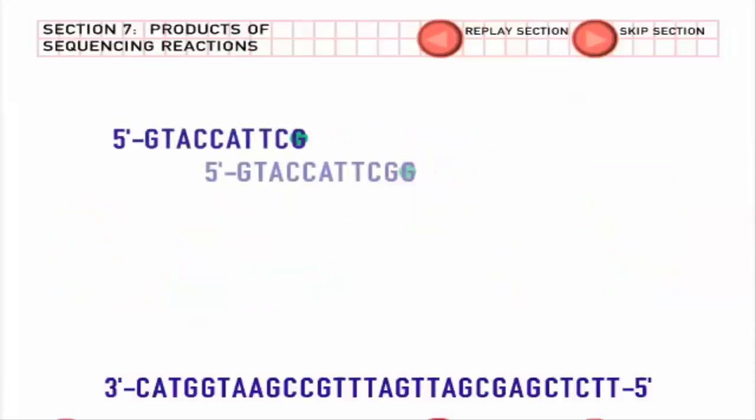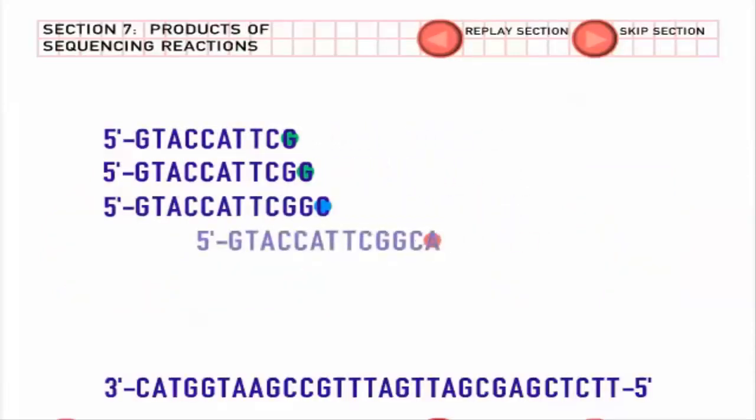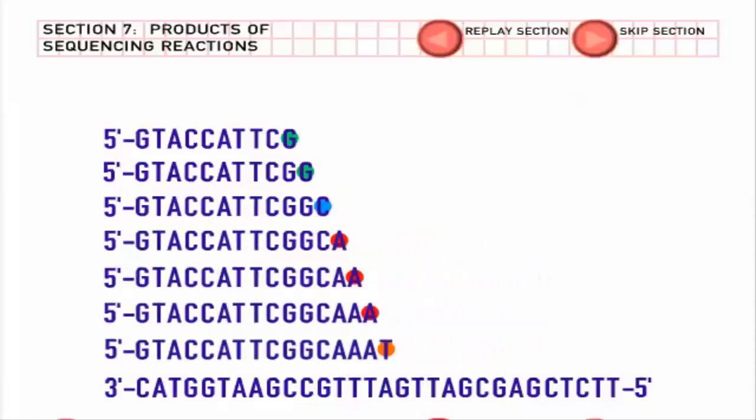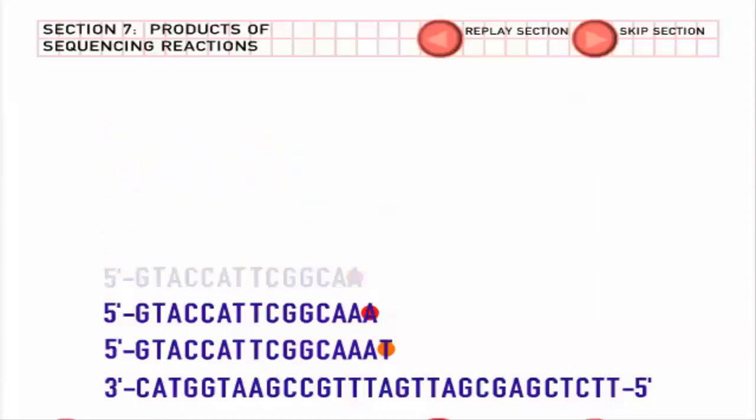A completed sequencing reaction contains an array of colored DNA fragments. The shortest are the length of the primer plus one colored base. The longest fragments are usually between 500 and 800 bases long, which is when the sequencing reaction runs out of steam.